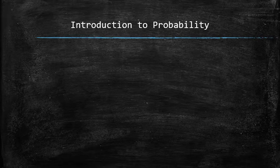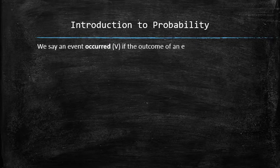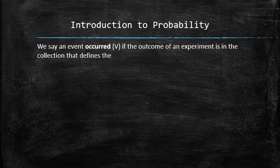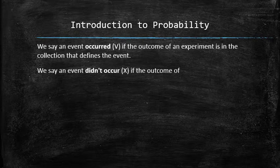After finishing the experiment, we say an event occurred if the outcome of the experiment is in the collection that defines the event. We say an event didn't occur if the outcome of the experiment is not in the collection that defines the event.